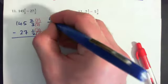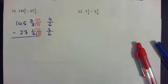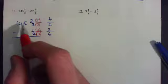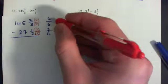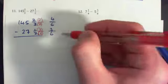So this one becomes 3/6 and this one is two times two, 4/6. What we have is 145 and 4/6 minus 27 and 3/6. Now you're going to subtract the whole numbers and then subtract the fractions.